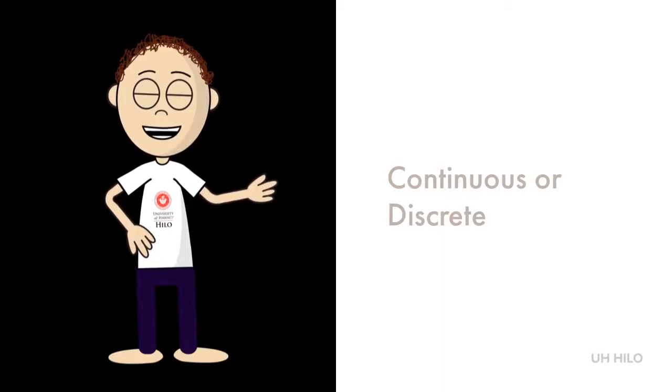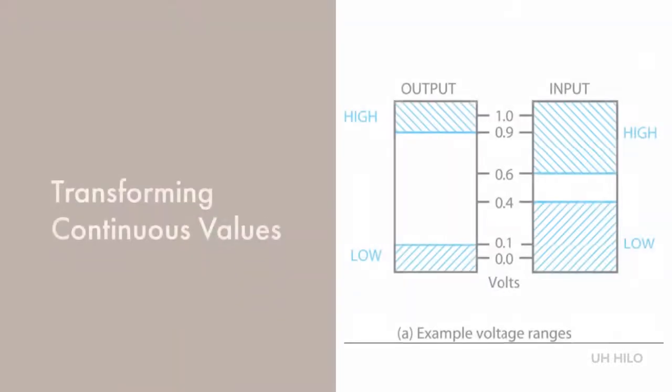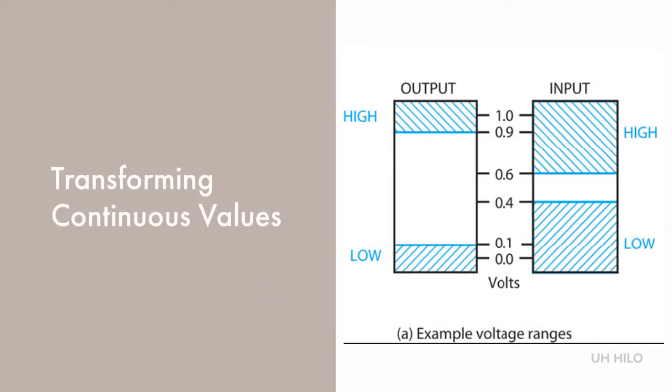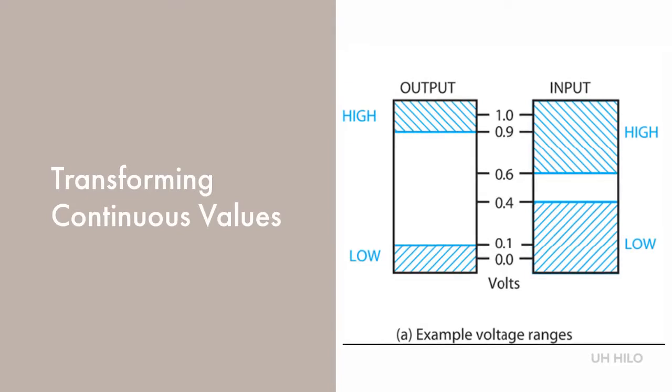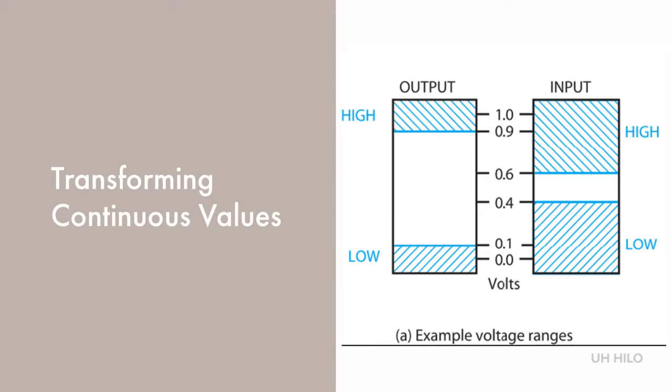In computer systems, we use binary and discrete values. So what do we do with the continuous values that originate from analog signals? Imagine that we have a range of continuous voltages from minus 0.1 to 1.1 volts, which means that our voltage is actually analog. We need to transform these voltages so that they can be used in the computer.